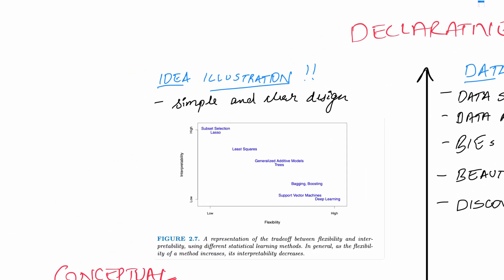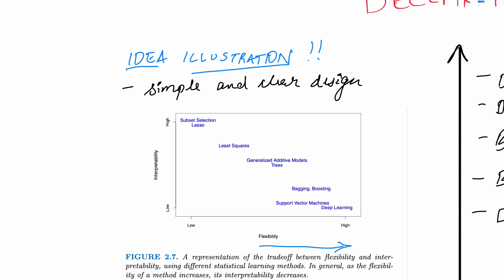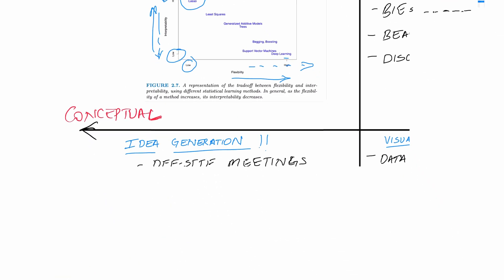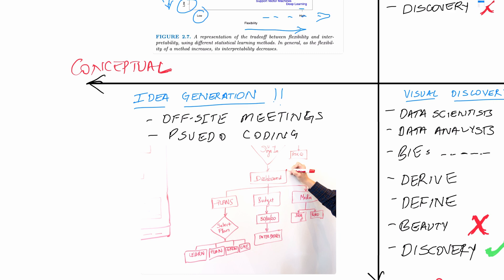For example, 'idea illustration' — the x-axis is flexibility, the y-axis is interpretability. This shows that the higher the flexibility, the less interpretable the models are. This comes from 'An Introduction to Statistical Learning.' It's a simple, clear design: higher flexibility, lower interpretability. This gives a clean illustration of an idea.